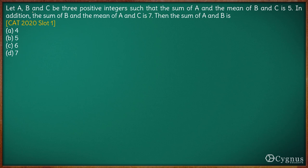Here in this question we have let a, b, c be three positive integers such that the sum of a and the mean of b and c is 5. We have sum of a and the mean of b and c. Mean of b and c is b plus c by 2, so this sum is equal to 5.